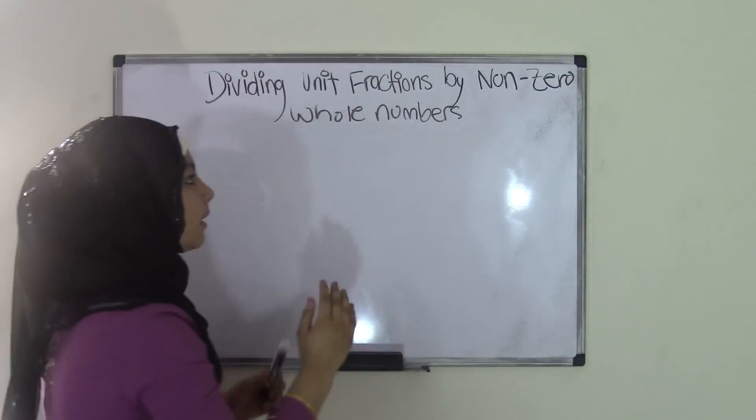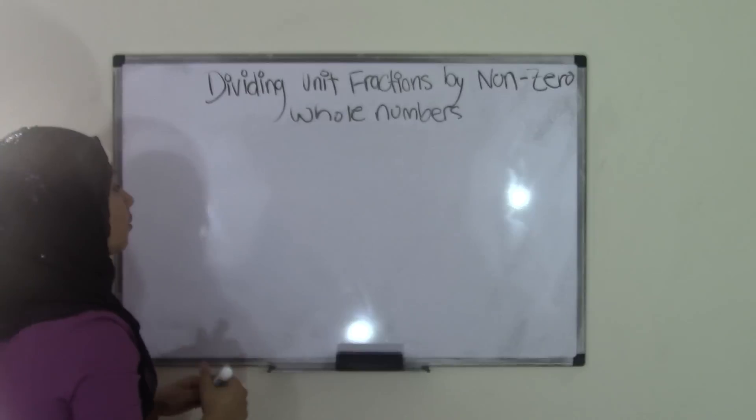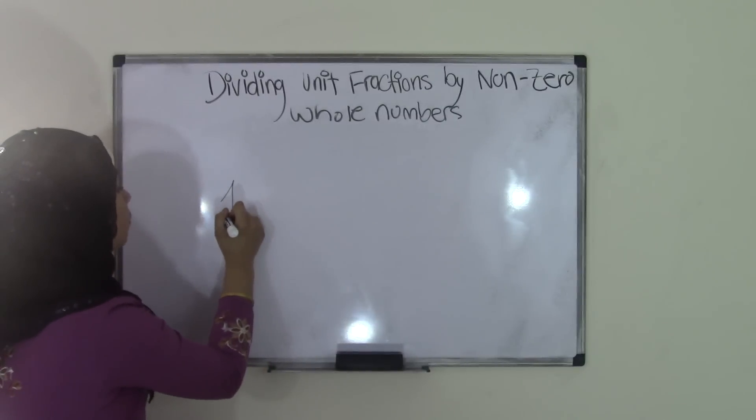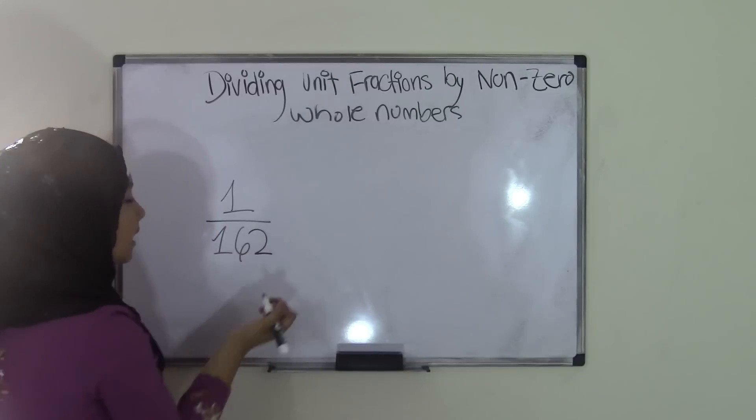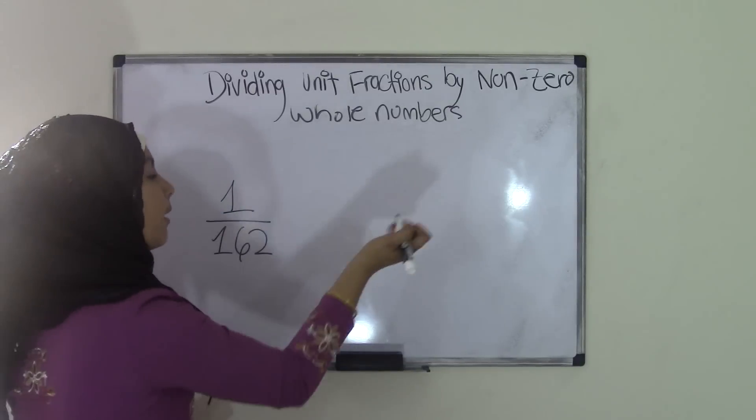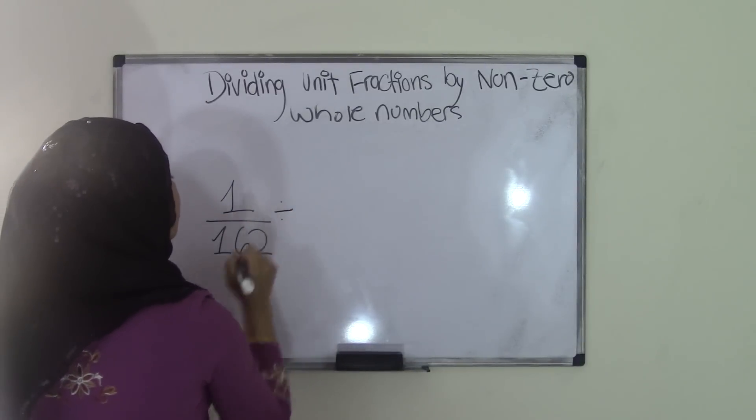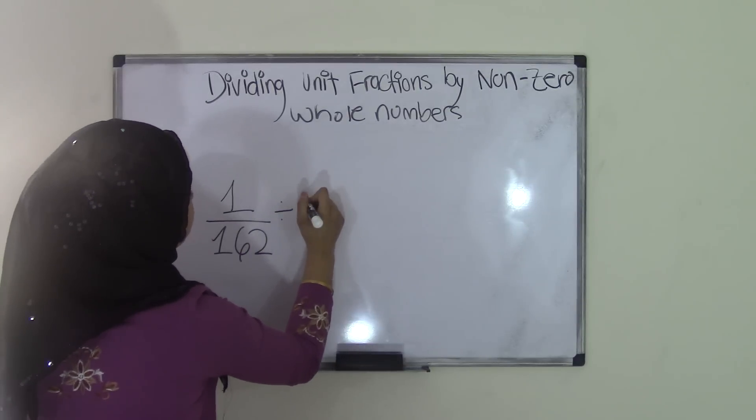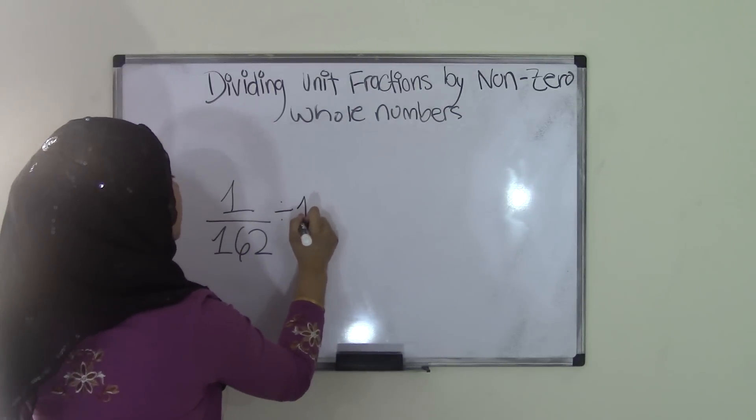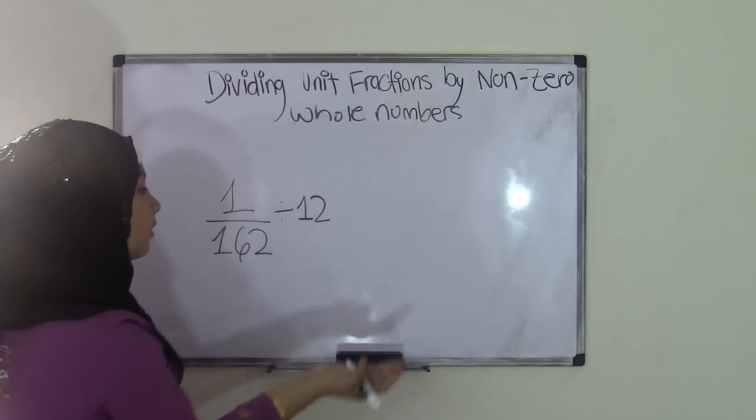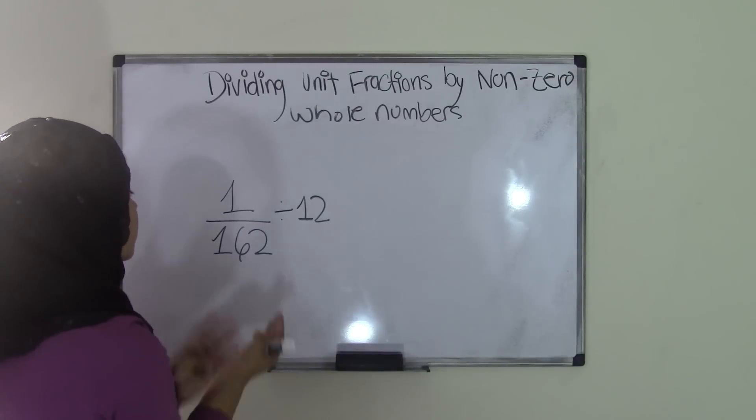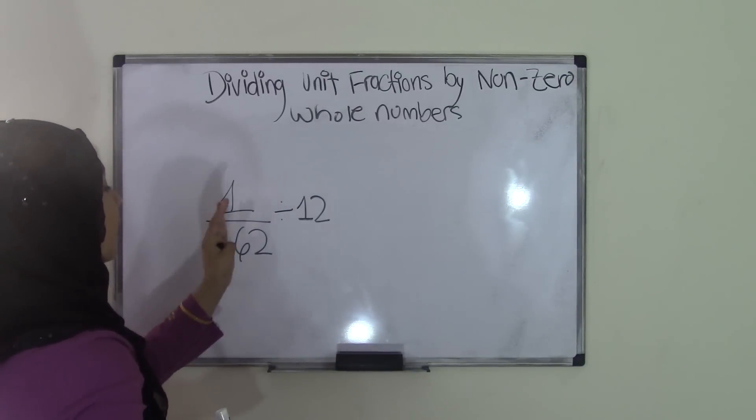And it's still going to be a unit fraction by a non-zero whole number, so our unit fraction could probably be 1 over, let's say, 162. So that's a bigger denominator, right? And by a non-zero whole number, let's say we have, let's say maybe 12. Because this is a non-zero whole number, right? It doesn't have any zeros. So 1 over 162 divided by 12.